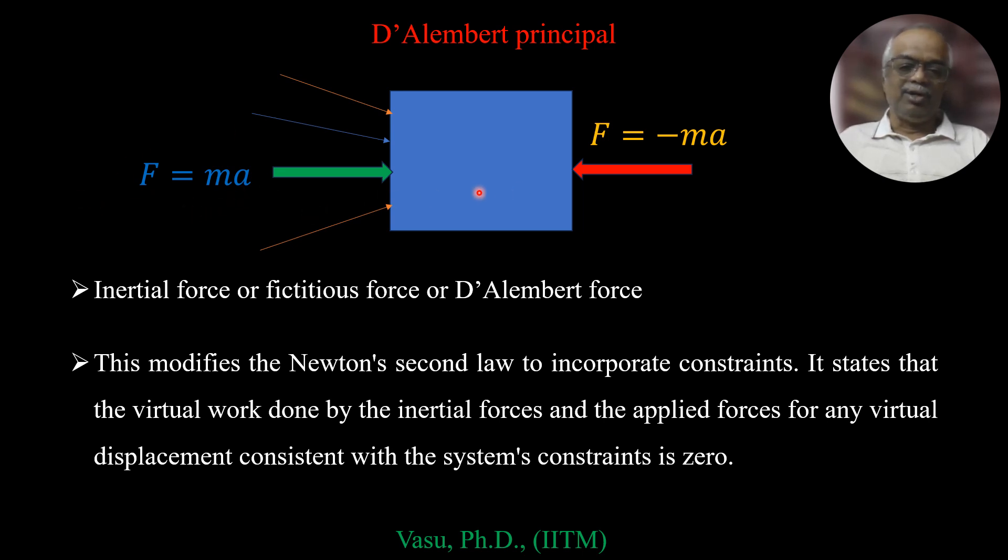Then we will take some fictitious force F equal to minus M·A. That is just opposite to this, so that this object is at rest or slowly moving one. This force which I have shown in red color is just opposite to the real force. So this force is called inertial force or fictitious force or D'Alembert force.